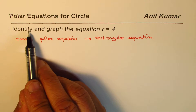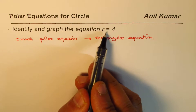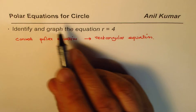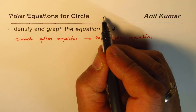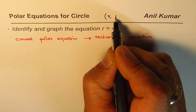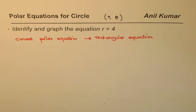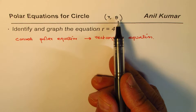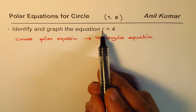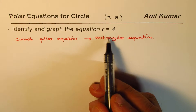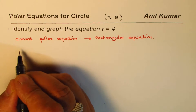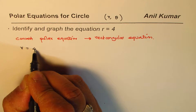The question here is: identify and graph the equation r equals 4. r equals 4 is the polar equation. Polar equations are in a form where r and theta are related. r is kind of the independent variable and theta is the dependent variable. So we have r equals 4.